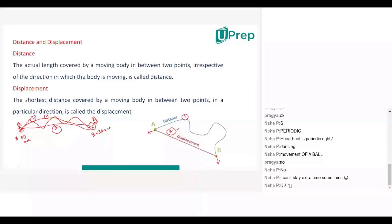The second path is the shortest one and the first path is the longer one. The object may reach from point A to B in the first path or in the second path. Some difference is there between the first path and the second path. This first path we mention with distance, and the second path we mention with displacement.